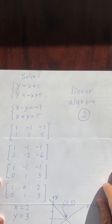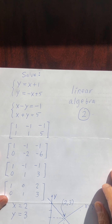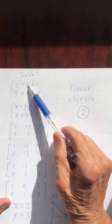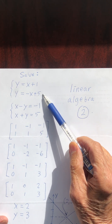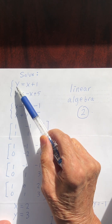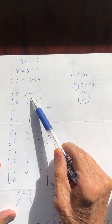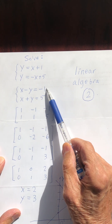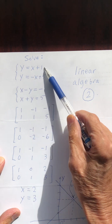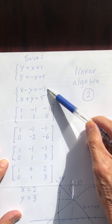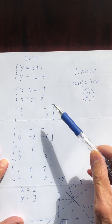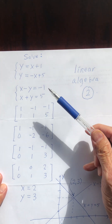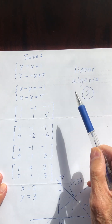Hello, this is linear algebra lesson 2. I want to solve a linear system — two equations and two unknowns. First, I rearrange these two equations into standard form: move the x and y to the left-hand side and put the constants on the right-hand side. Once I have this form, I can use a matrix to solve it. This is the method used in linear algebra using matrices.